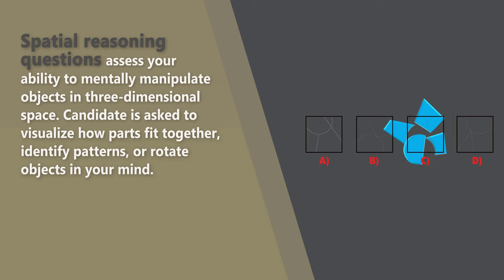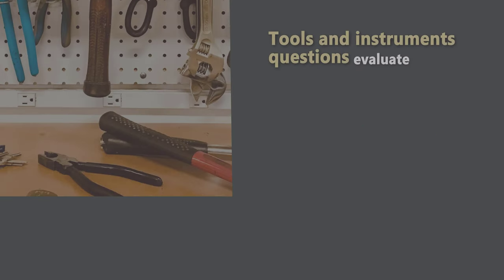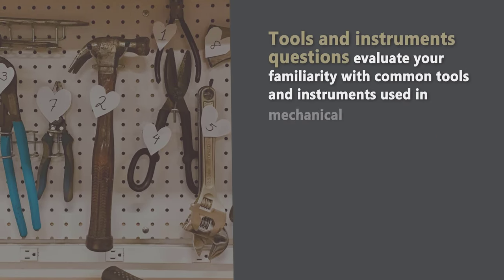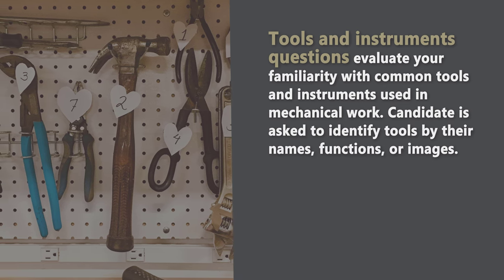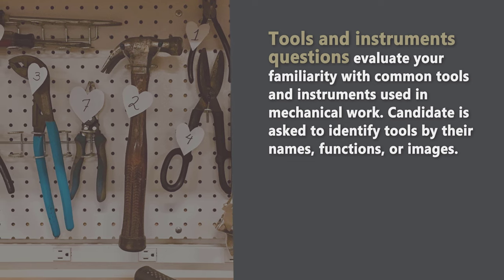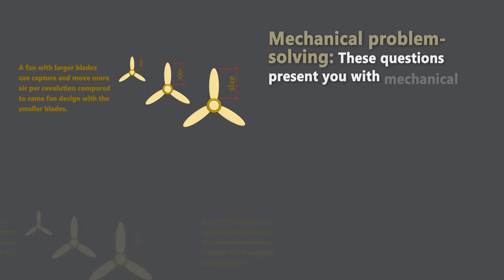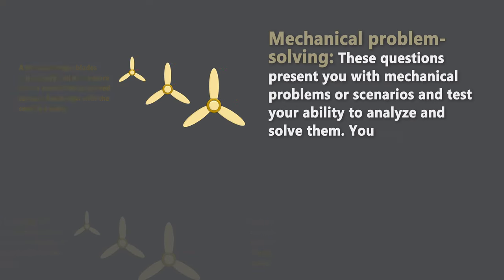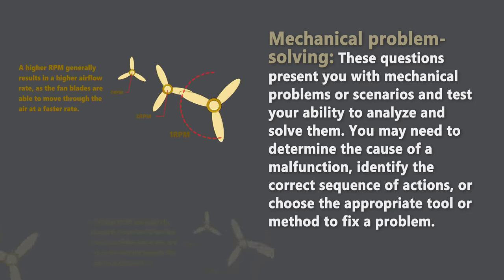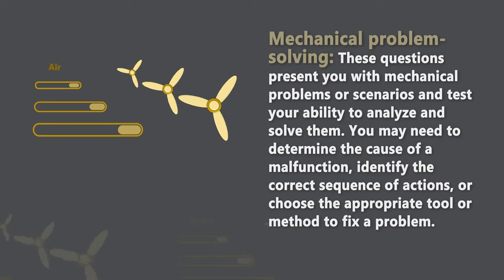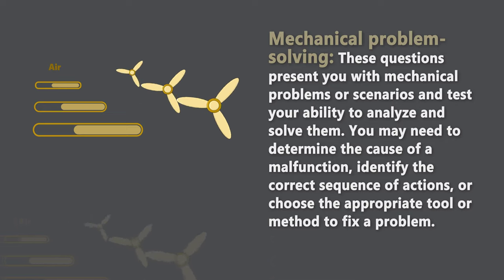Candidates are asked to visualize how parts fit together, identify patterns, or rotate objects in their mind. Tools and instrument questions evaluate your familiarity with common tools and instruments used in mechanical work. Candidates are asked to identify tools by names, functions, or images. The last category is mechanical problem solving — these questions present you with mechanical problems or scenarios and test your ability to analyze and solve them. You may need to determine the cause of a malfunction, identify the correct sequence of actions, or choose the appropriate tool or method to fix the problem.